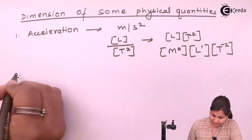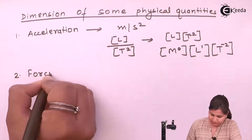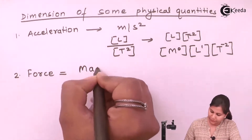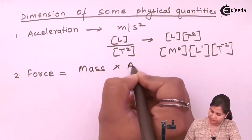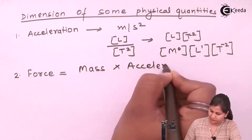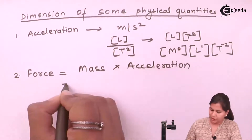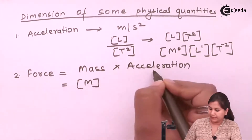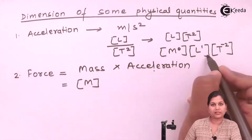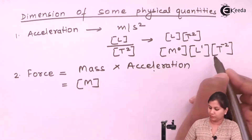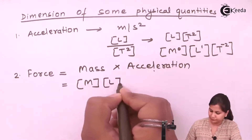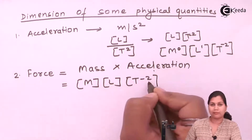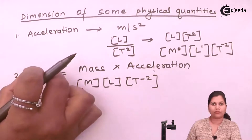Next is force. We know that force equals mass times acceleration. For mass we write M, and for acceleration we already know its dimension is [LT⁻²]. So the dimension for force is [MLT⁻²].